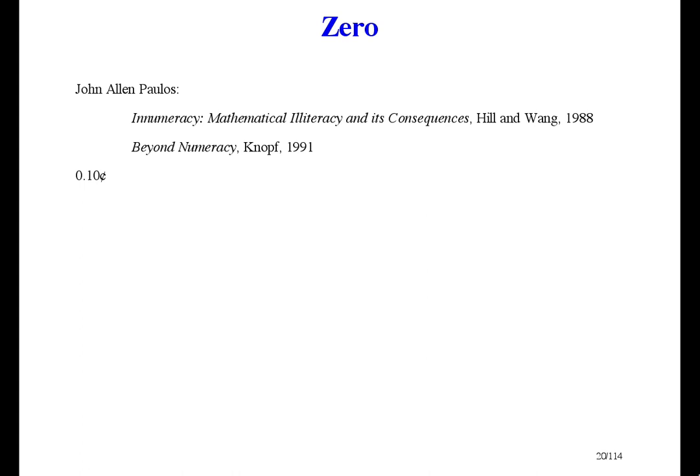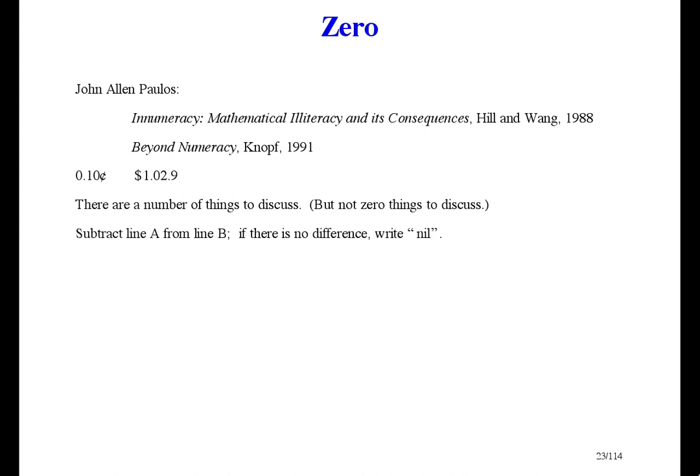I've seen this price tag on something that costs 10 cents. It says it costs a tenth of a cent. And I've seen a gas price written like this. What's the second decimal point for? It's just wrong. Now back to zero. Many people seem to dislike the number zero. Some don't even accept it as a number. If someone says, there are a number of things to discuss, they don't mean there might be zero things to discuss. They don't know what zero means and they don't know what to do with it. On a tax form or accounting form, you sometimes see the directive, subtract line A from line B. If there's no difference, write nil. On your keyboard and telephone, zero is placed after nine, which is mathematically silly.